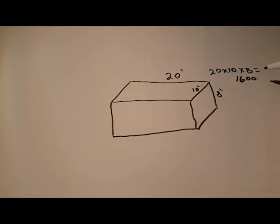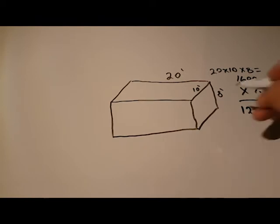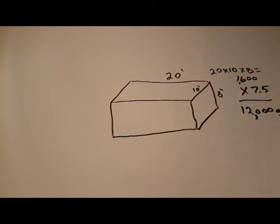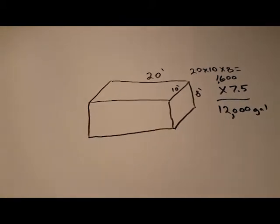So what we need to do to make that gallons is multiply by 7.5, and that will equal 12,000 gallons. So this swimming pool here is a 12,000 gallon swimming pool.